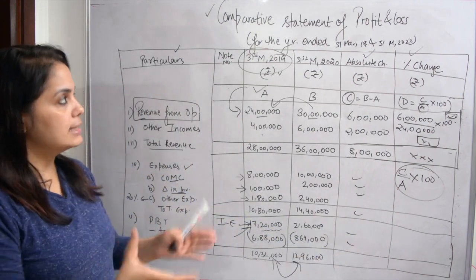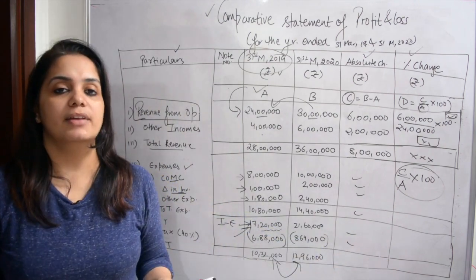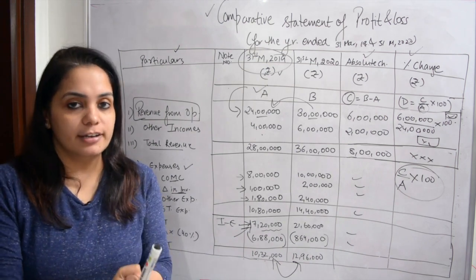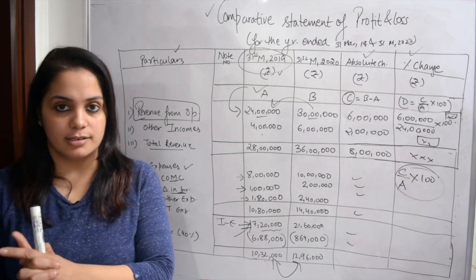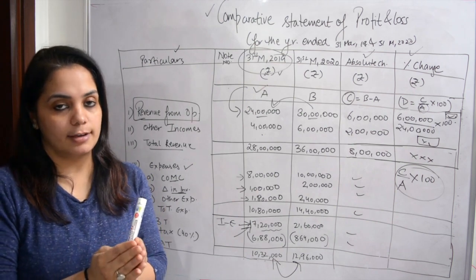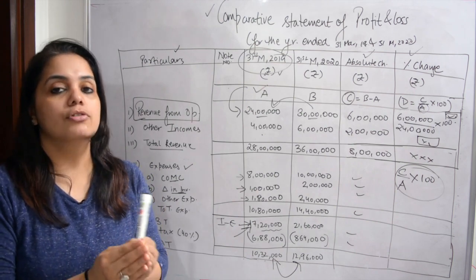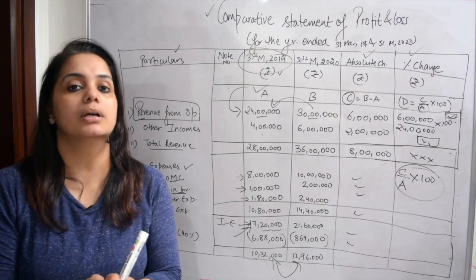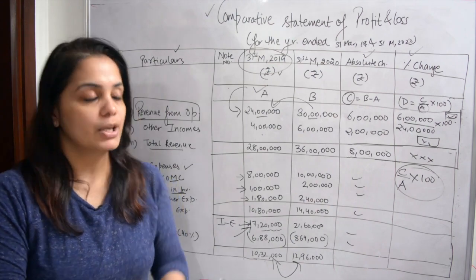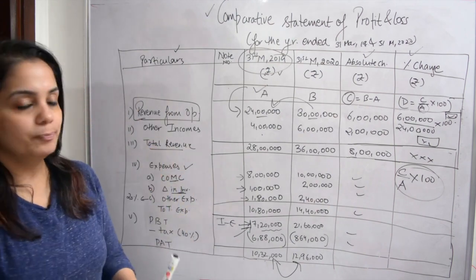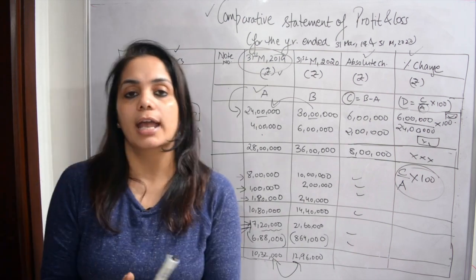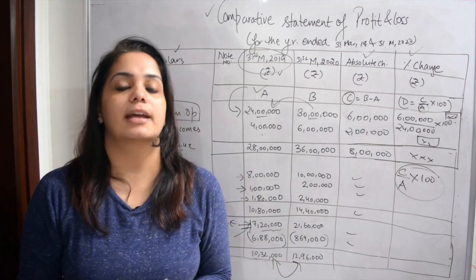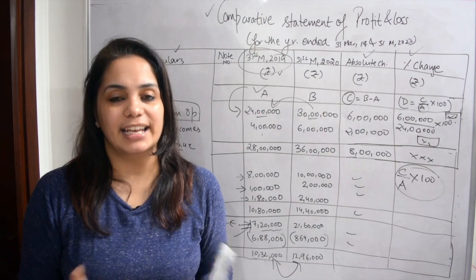So this was the comparative statement of profit and loss, wherein we compare profits of the current year with the profits of the previous year. We compare both years' profits, analyze them, and then make decisions about our company accordingly. That's all for this video. I hope you liked it — do not forget to like, share and subscribe to my channel Commerce Minded. Thank you.